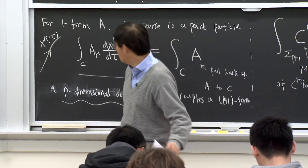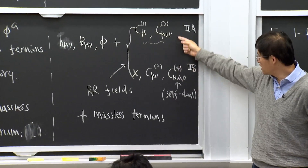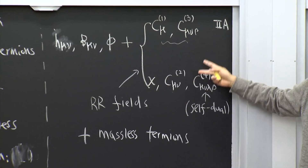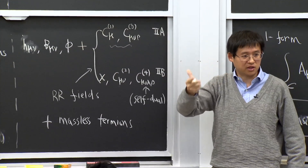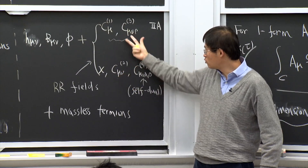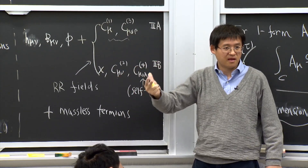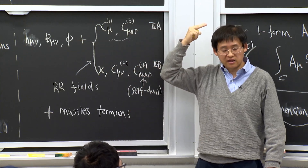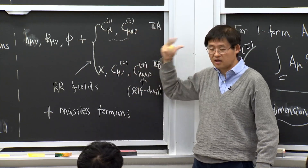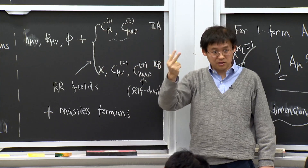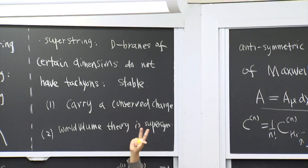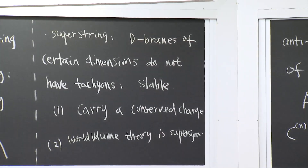The extended objects charged under those Ramond-Ramond gauge fields are precisely D-branes. Because they couple to those gauge fields, the minimal-charge D-branes are stable objects. This is related to why in superstring theory you find stable branes. For other dimensions, the D-brane will not be stable — it has no conserved charge — and you will find a tachyon in its world-volume spectrum.